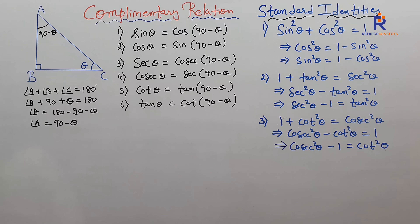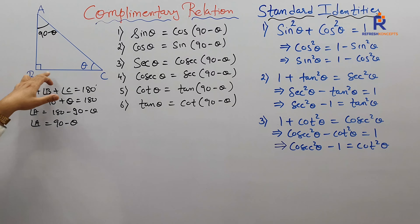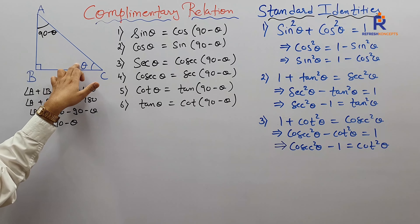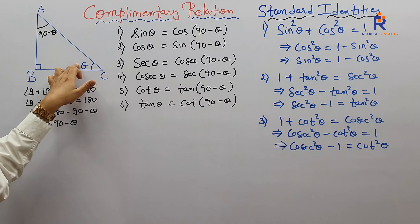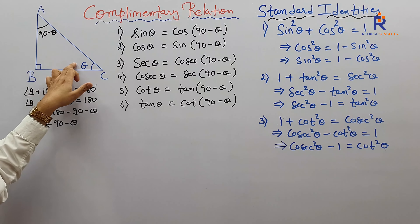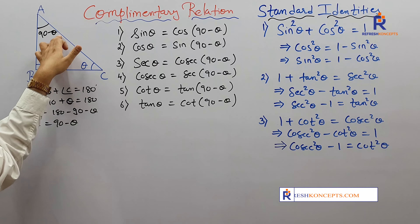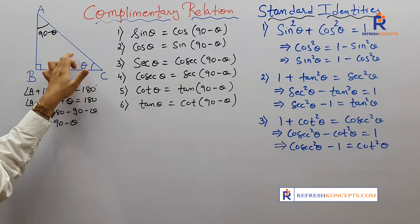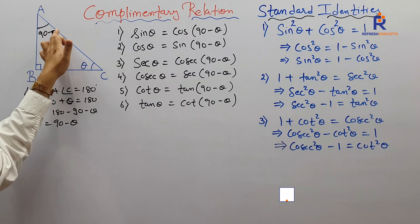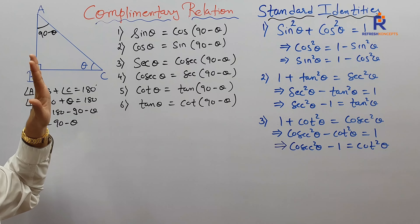Just remember this: in a right angle triangle, if one acute angle is theta, the other is 90 minus theta. If one angle is alpha, the other is 90 minus alpha. If one angle is beta, the other is 90 minus beta.